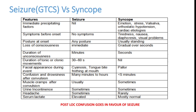The patient can have injuries after seizure, especially tongue biting, but that is not seen in syncope. Facial appearance during the event: in seizure the patient can have cyanosis, tongue bite, and frothing from the mouth, which are not typically seen in syncope. Regarding confusion and drowsiness after the event: in seizure, even after the event, the patient has post-ictal confusion, but this is not seen in syncope — the patient is absolutely normal after syncope.